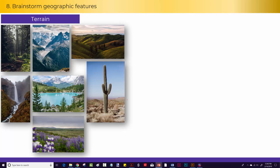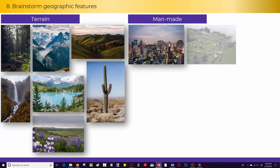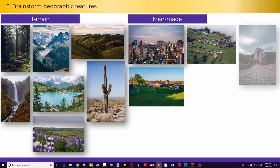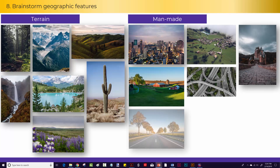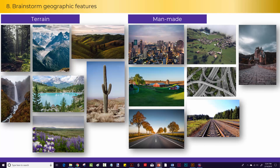The other type of geographic feature is man-made. These can be cities, towns, villages, buildings, farms, or other man-made structures like roads or railroads, paths, etc.